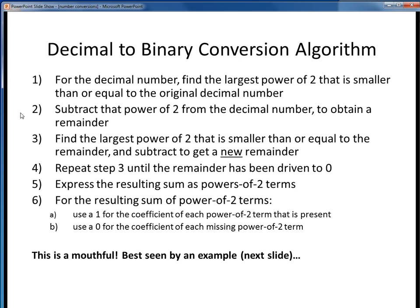Then subtract that power of 2 from your decimal number to obtain a remainder. Then you would repeat this process over and over again until you've driven the remainder down to zero. At this point, you've decomposed your original number into a sum of terms which are all powers of 2.